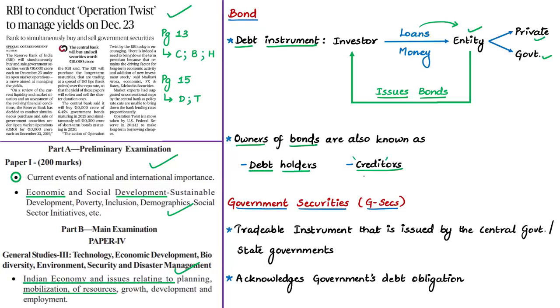Those who lend money to the issuer of the bond are called owners of bonds, also called debt holders or creditors of the issuer. They are called creditors because they give credit to the issuing authority while receiving the bond as a debt instrument. They are debt holders — meaning they have given debt to the issuing authority and are waiting to get their money back.